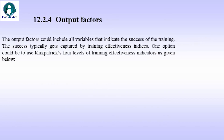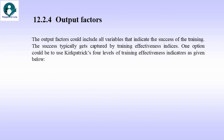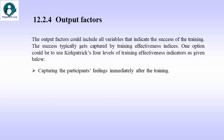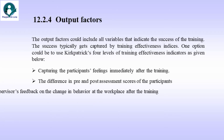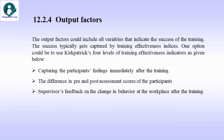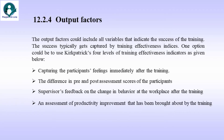Output factors could include all variables that indicate the success of the training. The success typically gets captured by training effectiveness indices. One option could be to use Kirkpatrick's four levels of training effectiveness indicators: capturing the participants' feeling immediately after the training, the difference in pre- and post-assessment scores, supervisors' feedback on the change in behavior at the workplace after the training, and an assessment of productivity improvement brought about by the training.